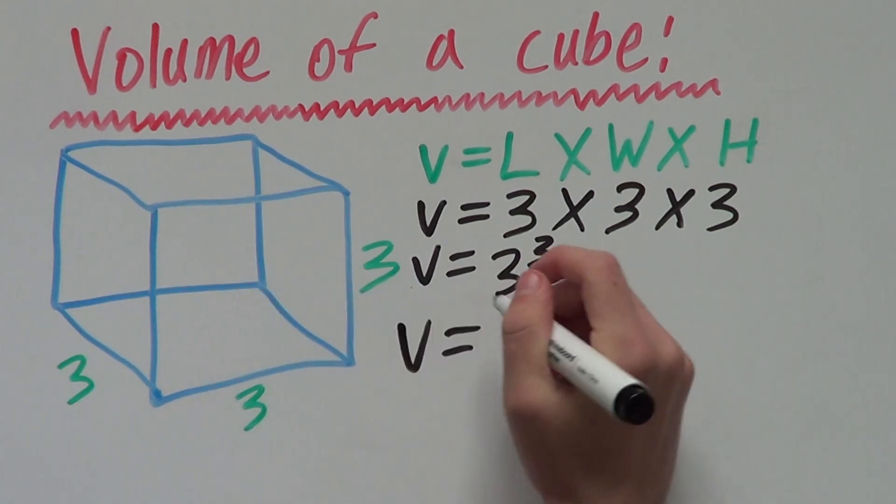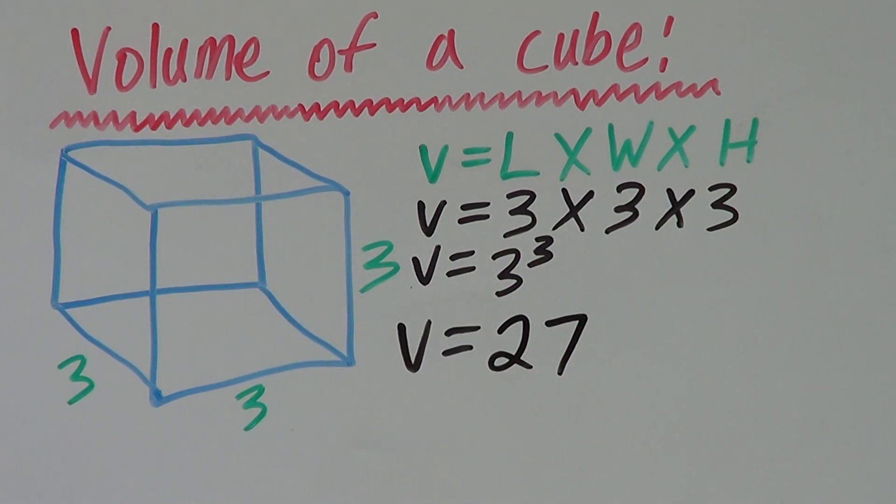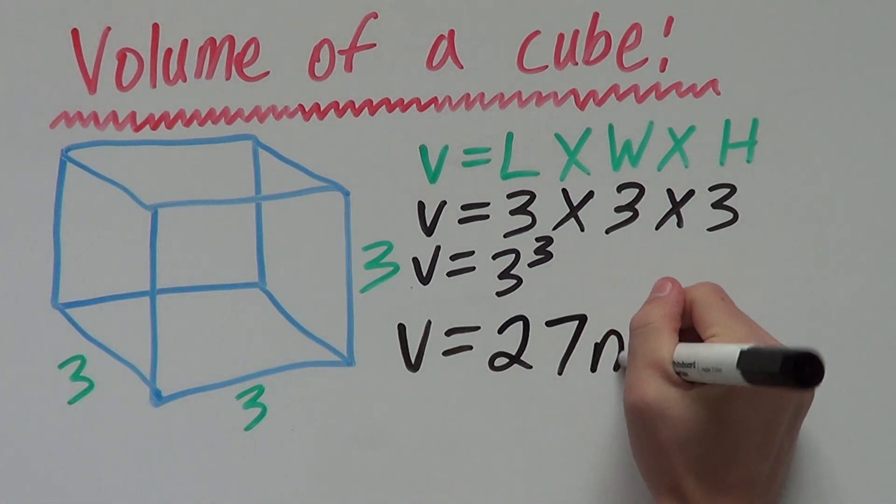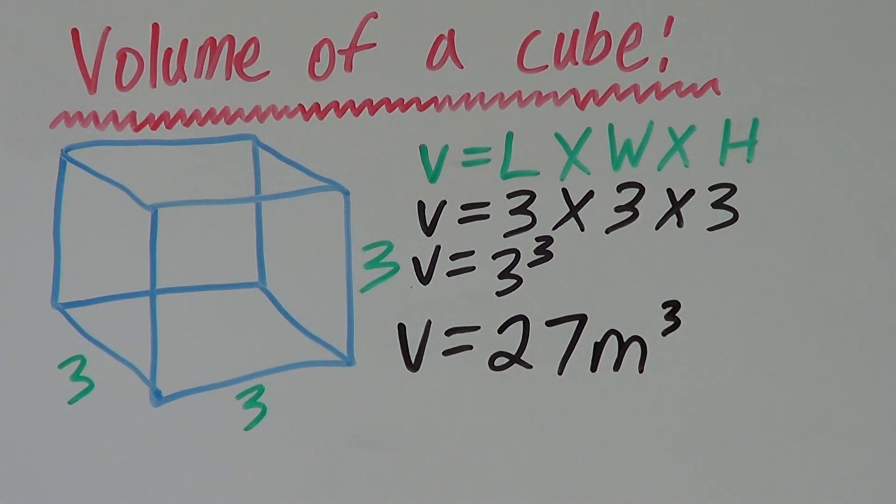Our volume of this cube is 27, whatever units you're using, say meters, and cubed. We write a little 3 like that because it's volume, and we use cubed.